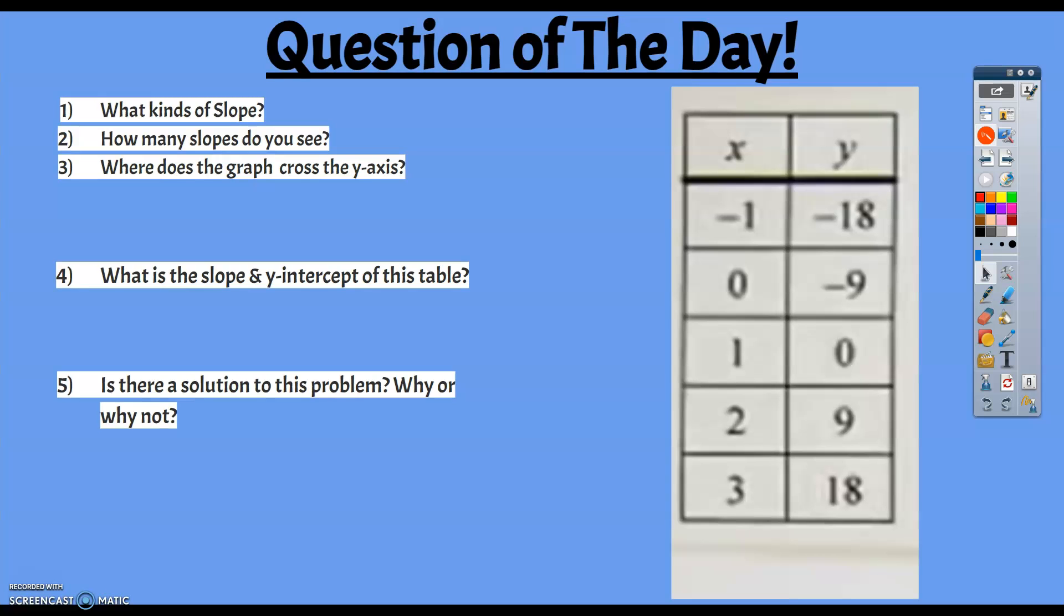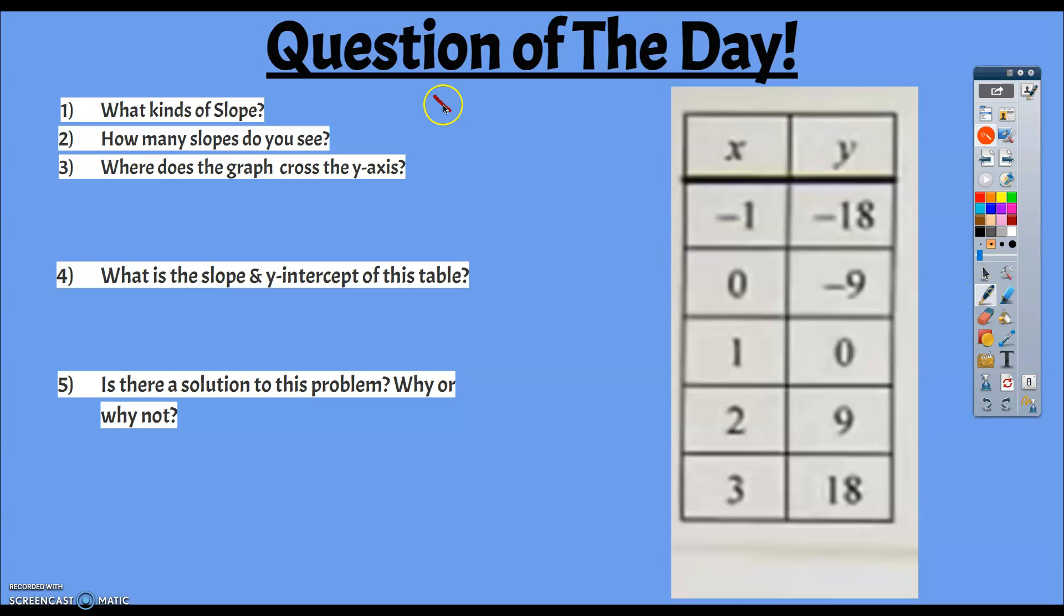So the equation of a line is, as we all know, y equals mx plus b. So we're going to put that in there. We're going to identify our slope. Our slope is always our m, and our m, being our slope, is always going to be rise over run.